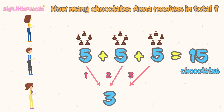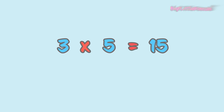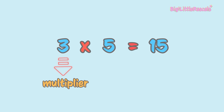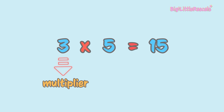...3 of 5. So, 3 times the number 5. If we use multiplication, we write it like this: 3 multiplied by 5 equals 15 chocolates. Or, 3 times 5 equals 15 chocolates. So, we are multiplying a number with a multiplier to get the total result.